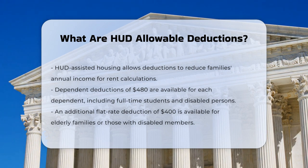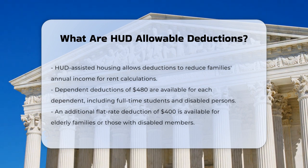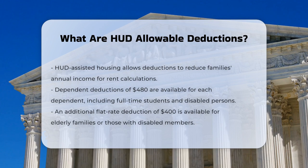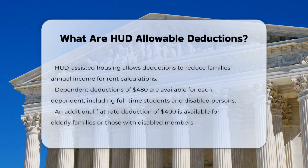First, let's talk about dependent deductions. For each dependent, including full-time students or persons with a disability, you can deduct $480 from the family's annual income. This helps families with more dependents to have a lower rent burden.